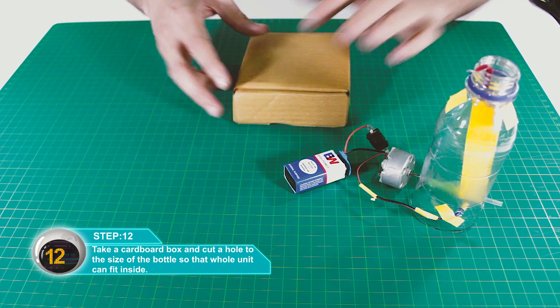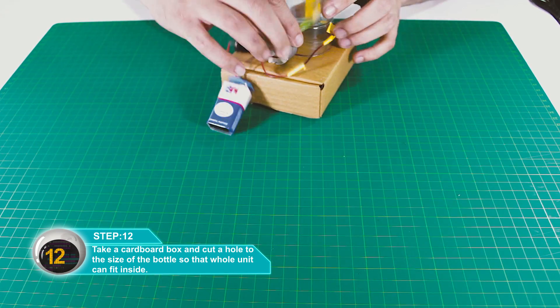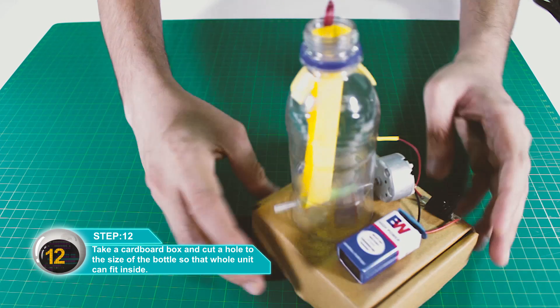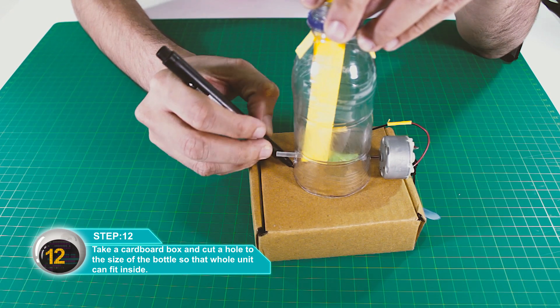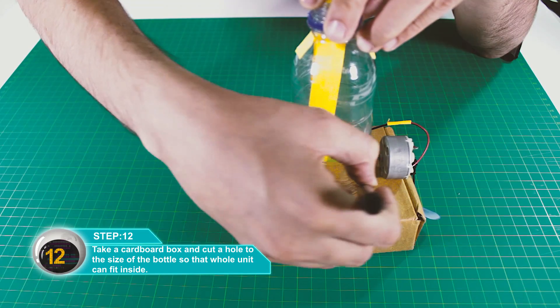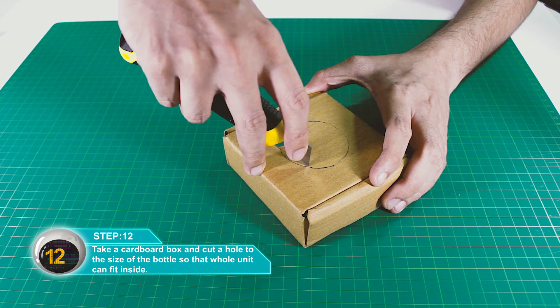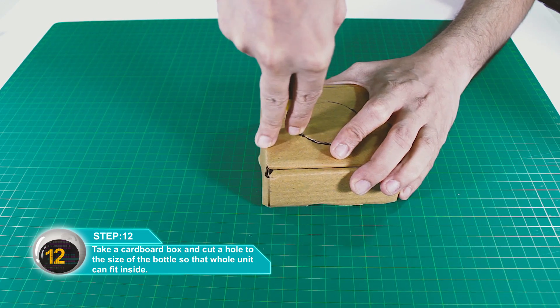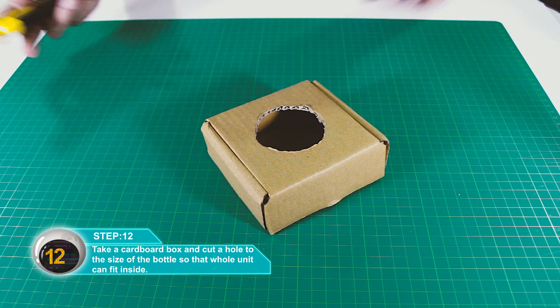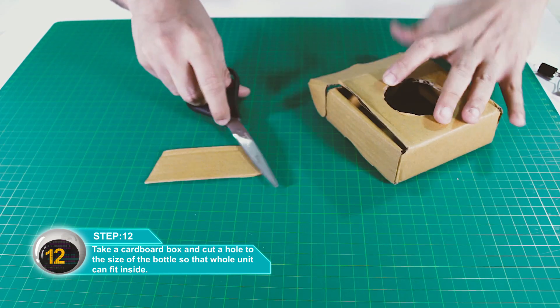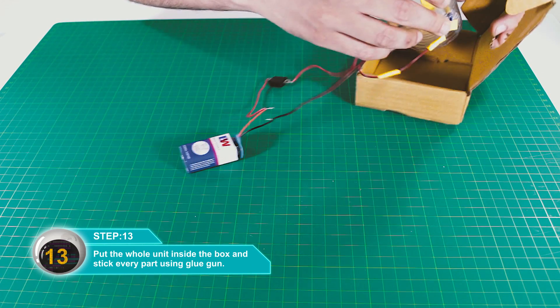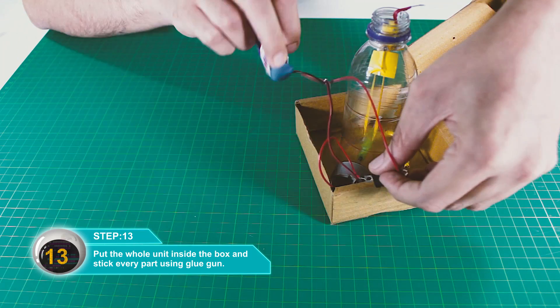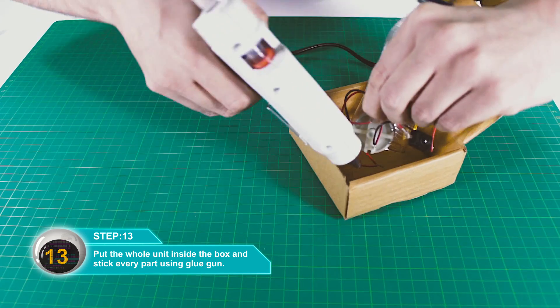Take a cardboard box and cut a hole in the center the size of the bottle so the whole unit fits inside. Now place the entire unit inside and glue all parts with a glue gun.